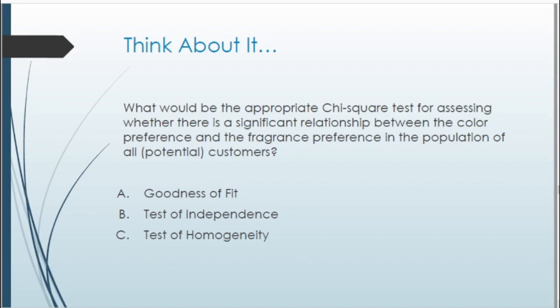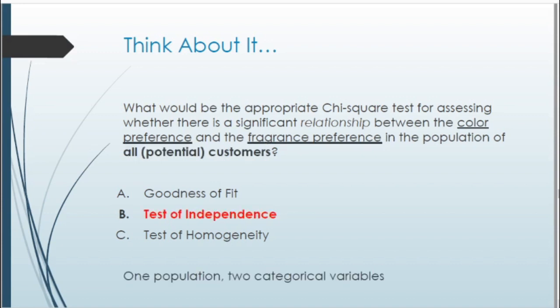Next question: what is the appropriate chi-square test for assessing whether there is a significant relationship between color preference and fragrance preference for the population of all potential customers? This is a test of independence. We have one population and two categorical variables — color preference and fragrance preference — and we want to see if there is a relationship between those two variables.